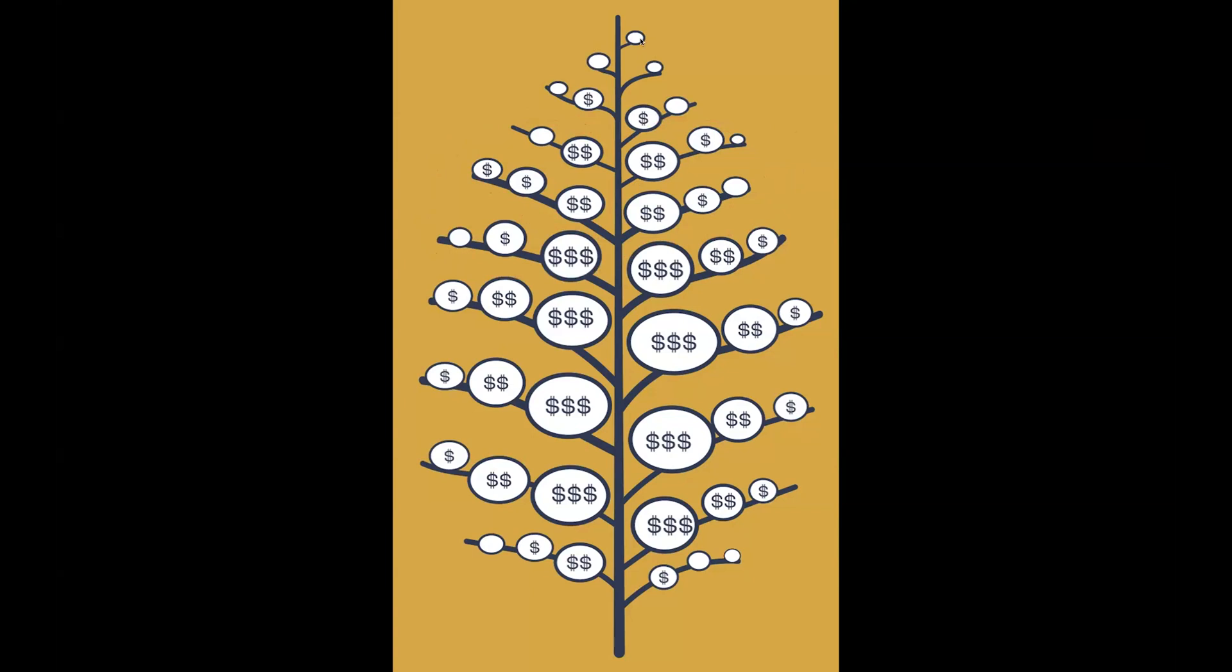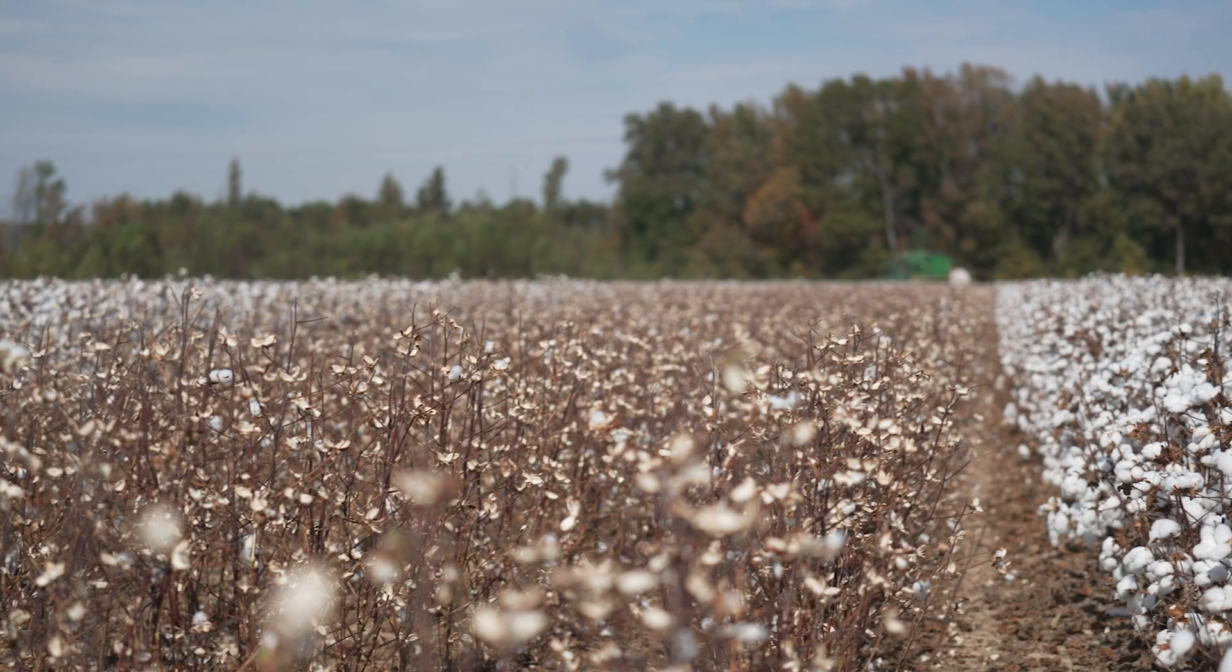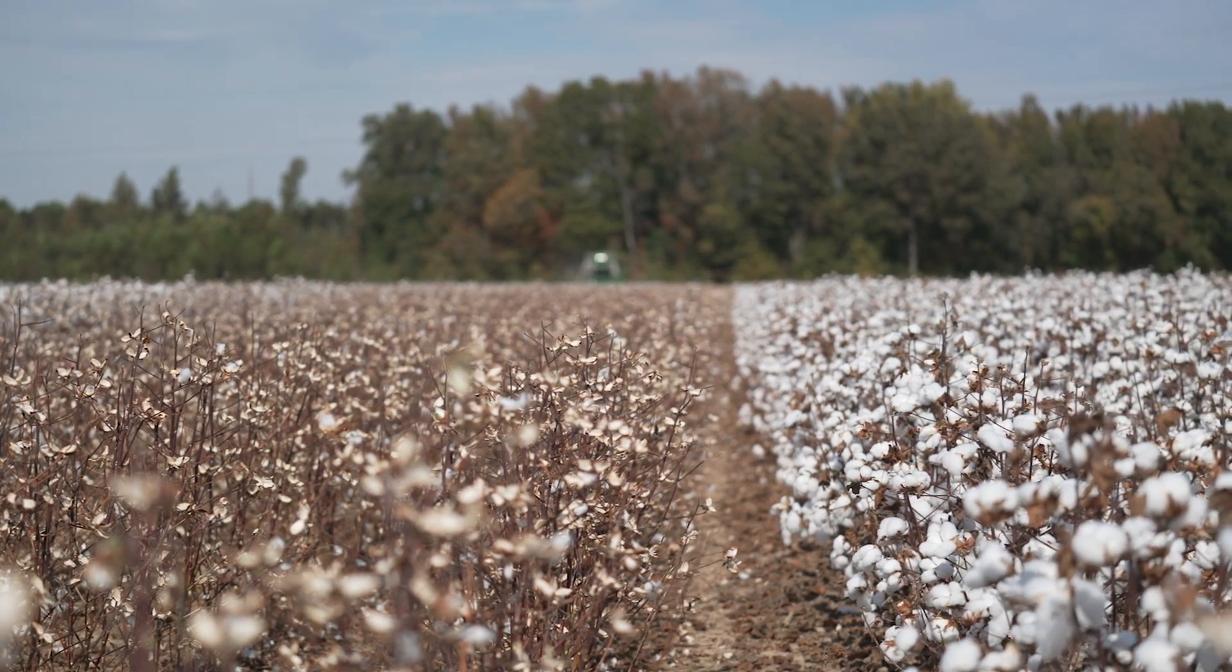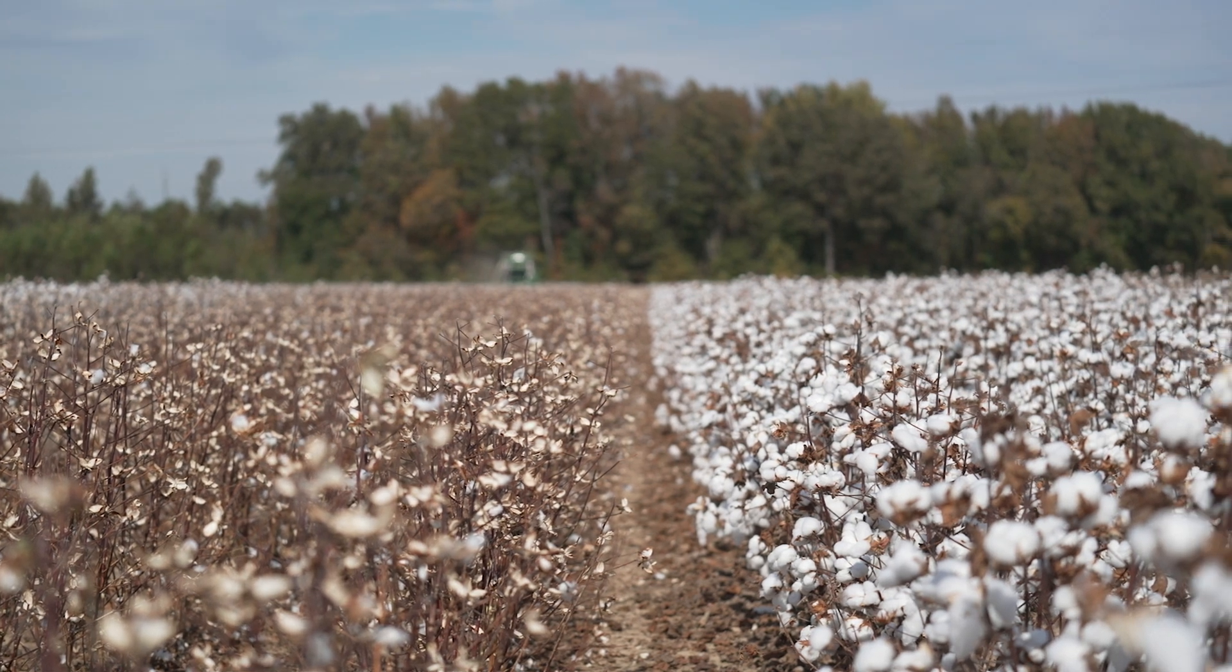As we move into the very top portion of this cotton plant, we start moving into what we call cutout. These are branches 17 through 20. Square retention is typically high during this time period, but you face huge challenges with that crop moving out of vegetative and more just strictly reproductive, and your bowl weight and fiber quality really suffer at this time, typically contributing very minimal overall yield.